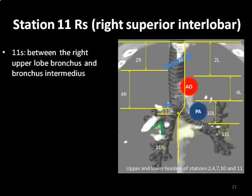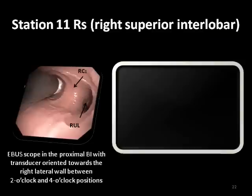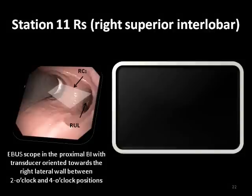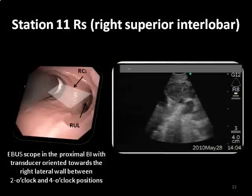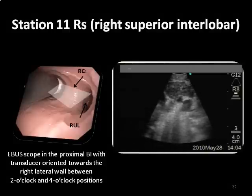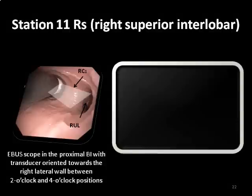Station 11R, superior, includes nodes between the right upper lobe bronchus and the bronchus intermedius. To visualize hilar Station 11R superior, the tip of the EBUS scope is placed in the proximal bronchus intermedius, just below the subcarina separating the upper lobe bronchus from the bronchus intermedius. The area between the 2 o'clock and 4 o'clock positions is scanned. The lymph node and interlobar artery located at the 9 o'clock position are clearly seen.